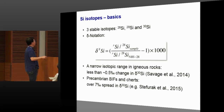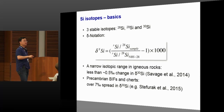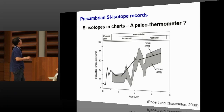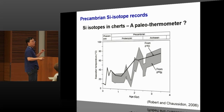High temperature processes do not significantly fractionate silicon isotopes — there's only about a 0.5 per mil change in igneous rocks. But variation can be pretty large in low-temperature environments, and over 7 per mil spread was reported for Precambrian chert. So the question is how to interpret this large spread in the delta silicon 30 values. A previous study proposed that silicon isotope in Precambrian chert can reflect seawater temperature at the time, based on the observation that silicon isotopes follow a similar trend as oxygen isotopes.